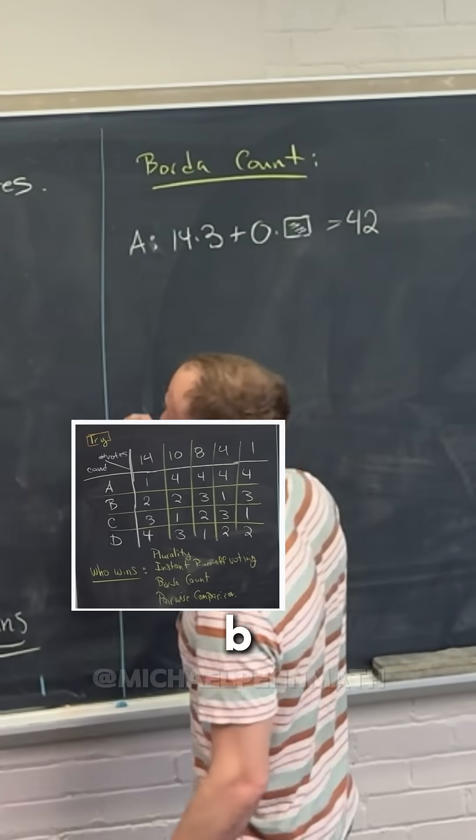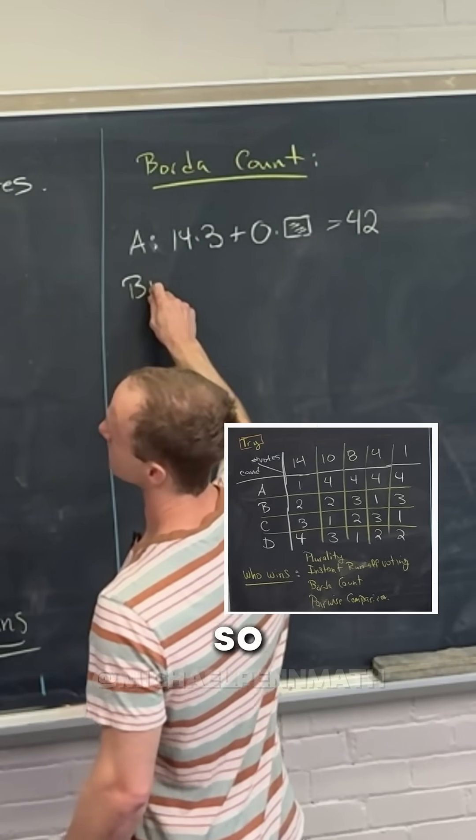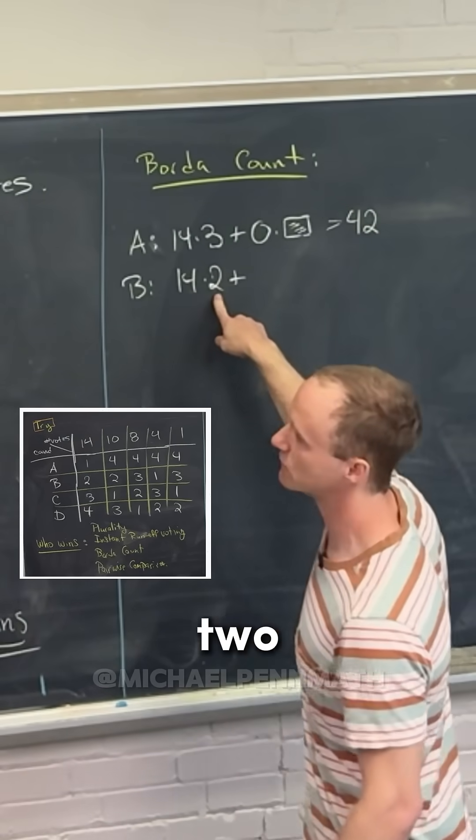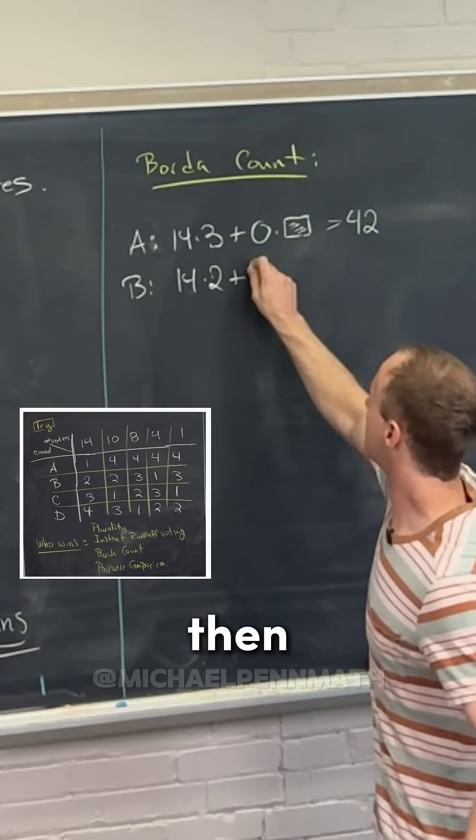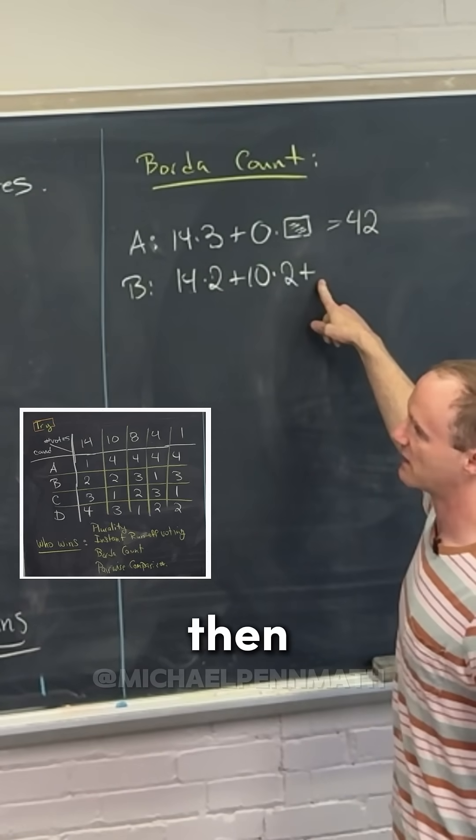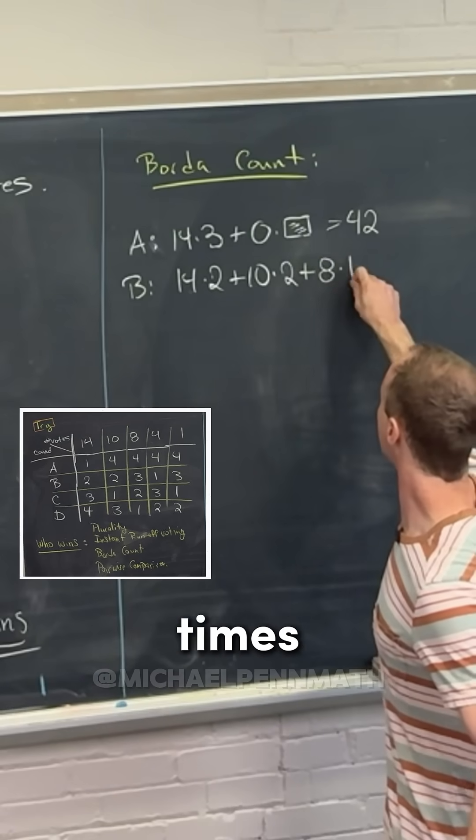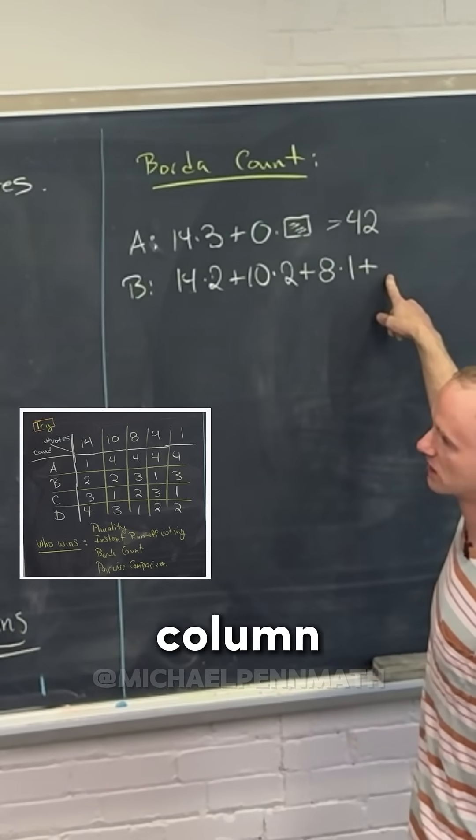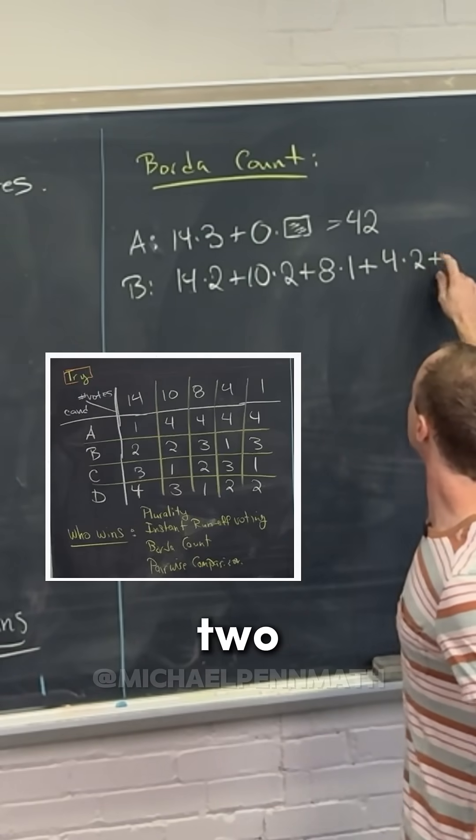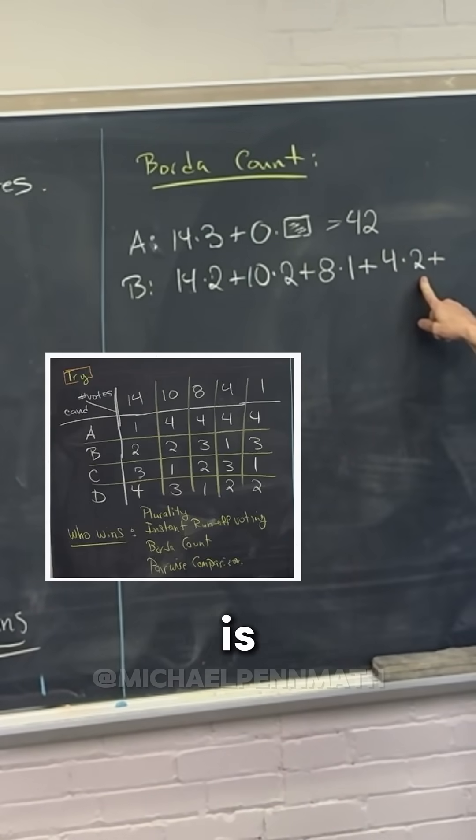Now let's look at B. So this is a little bit trickier. We're going to have 14 times two for the first column, and then 10 times two for the second column, and then eight times one for the third column, right? And then four times two for the fourth column. Is that right? Yeah.